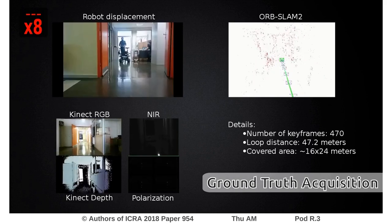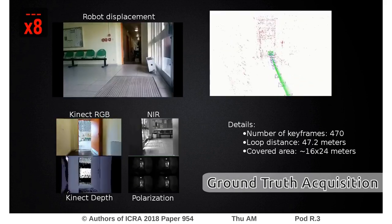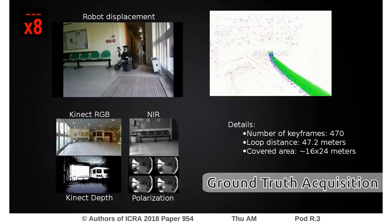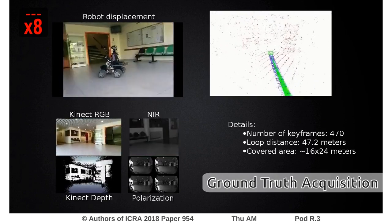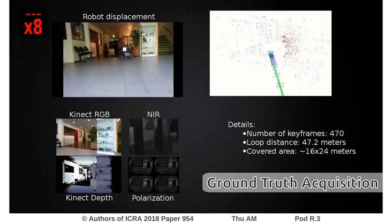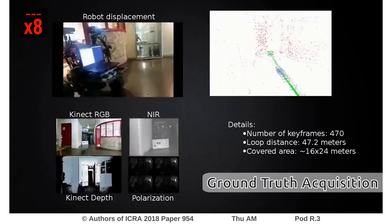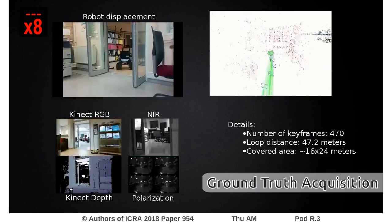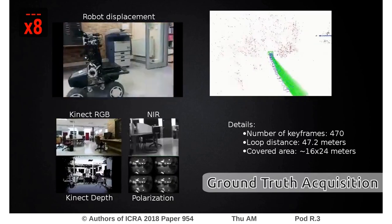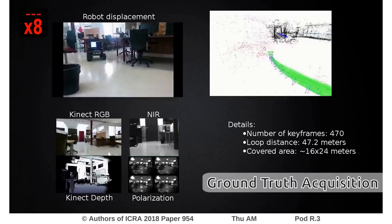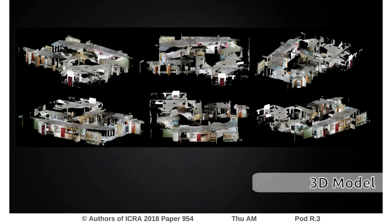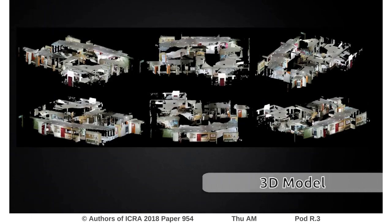During the acquisitions, the robot trajectory is estimated using OrbSLAM on the Kinect data. For each OrbSLAM keyframe, the data captured by the three cameras in their respective pose are saved. A 3D model of the environment is built using the point clouds of every keyframe.